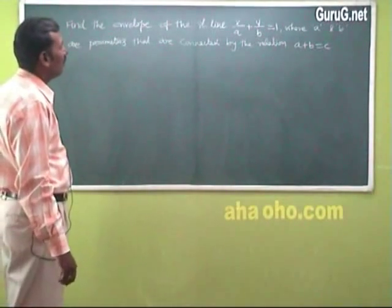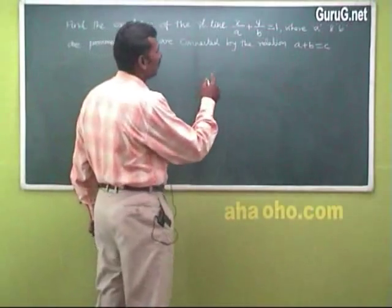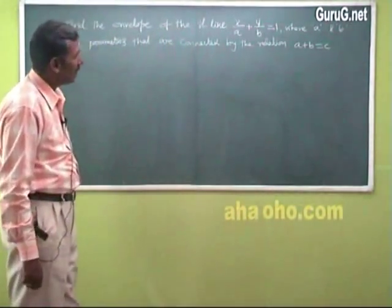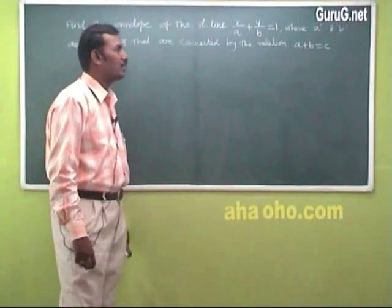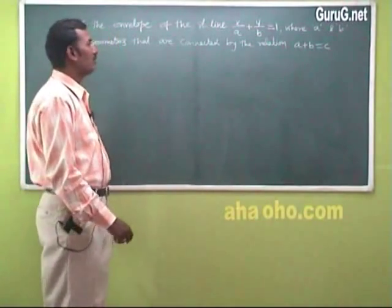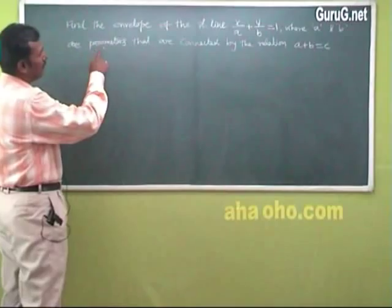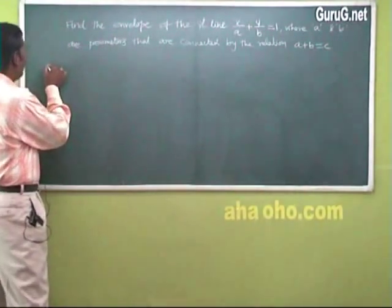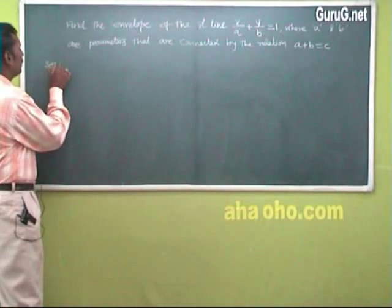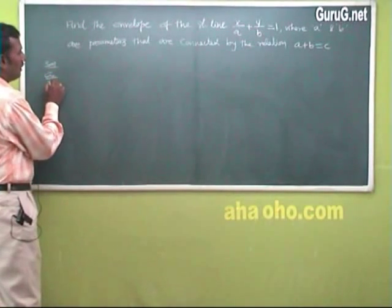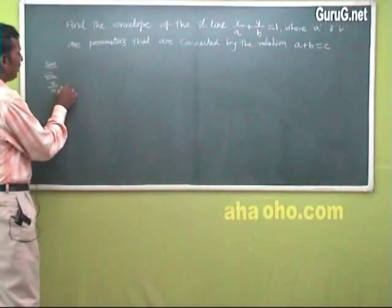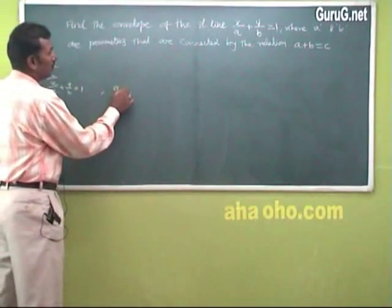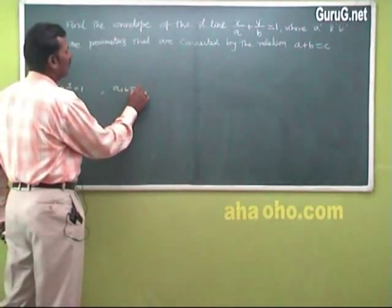Find the envelope of the straight line x/a + y/b = 1, where a and b are parameters connected by the relation a + b = c. In this class we have a single parameter problem and a double parameter problem. Given x/a + y/b = 1 and a + b = c.